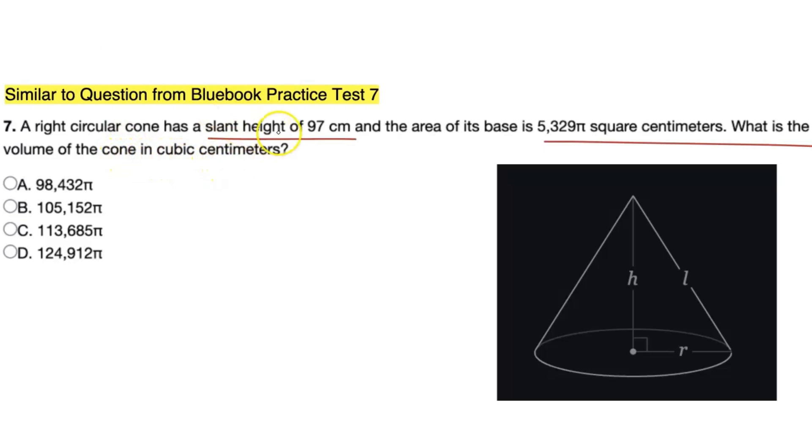Let's get into it. This one is similar to a question from Blue Book practice test number 7. It says a right circular cone has a slant height of 97 centimeters and the area of its base is 5,329π square centimeters. What is the volume of the cone in cubic centimeters? Let me switch colors here.